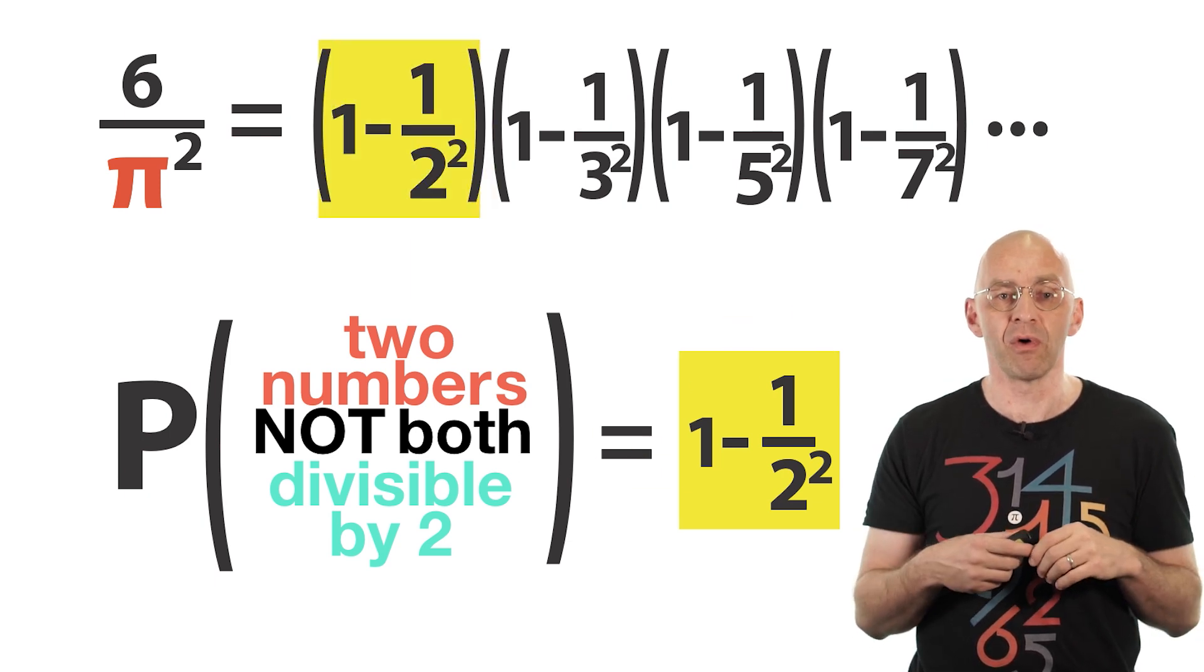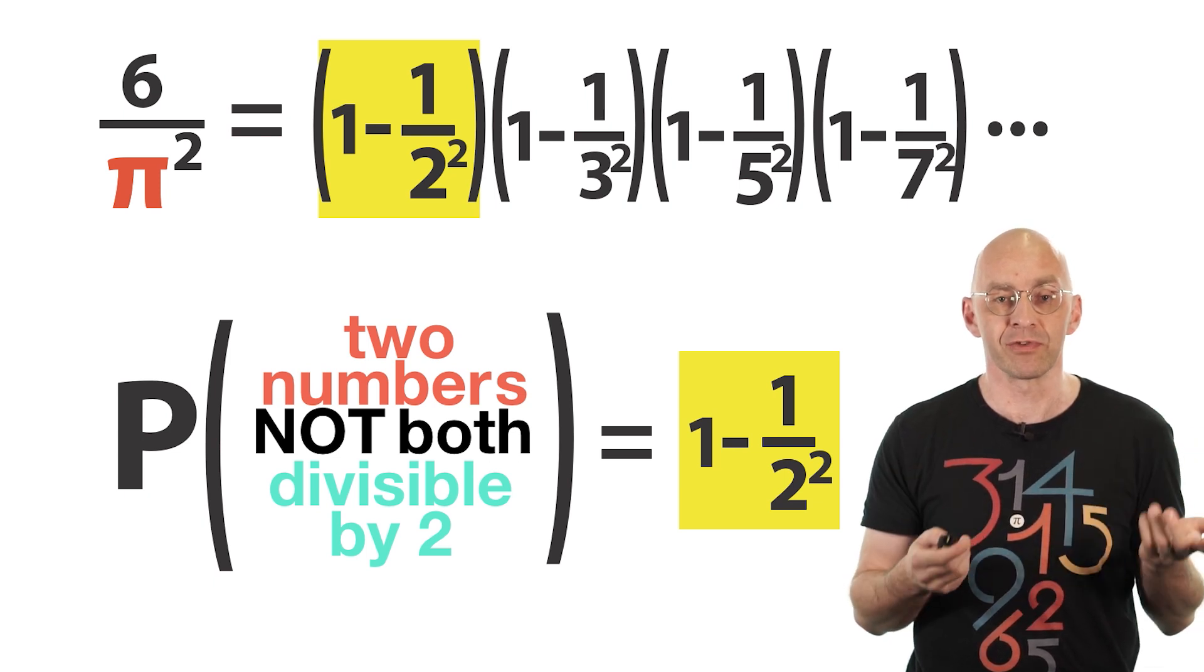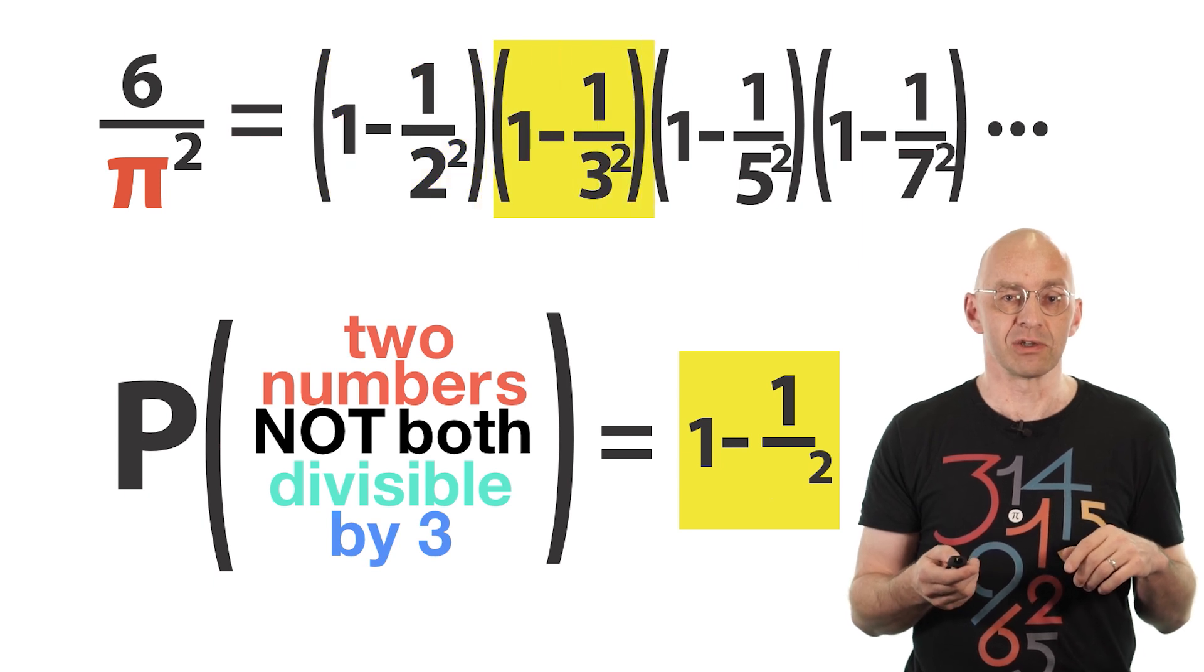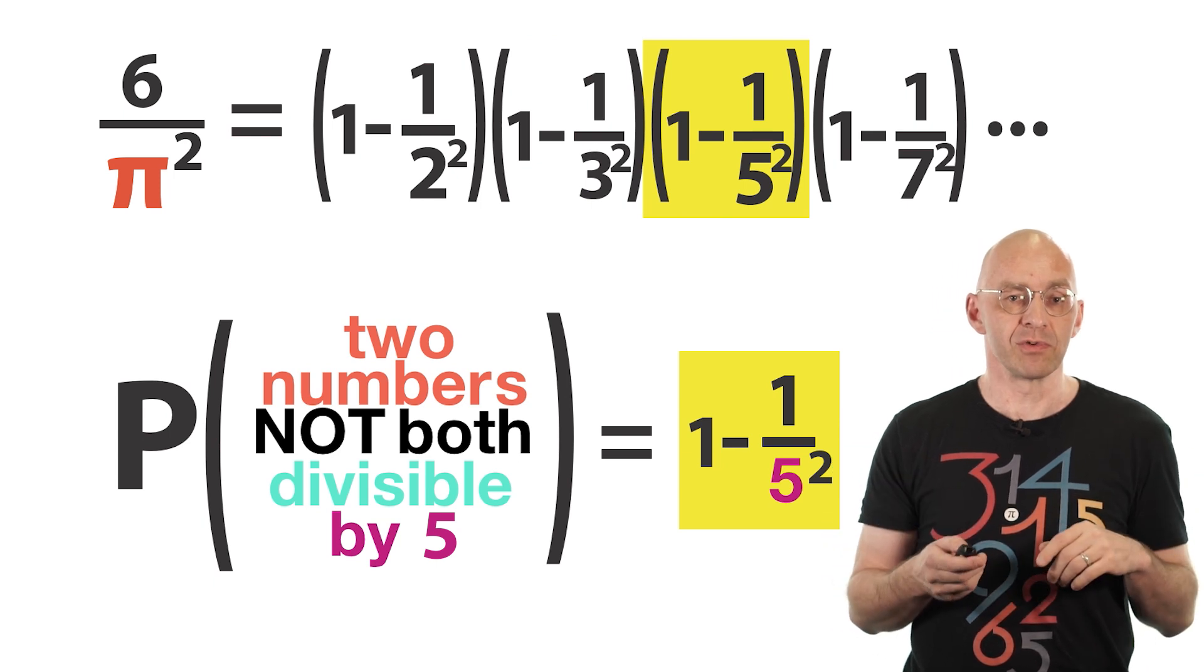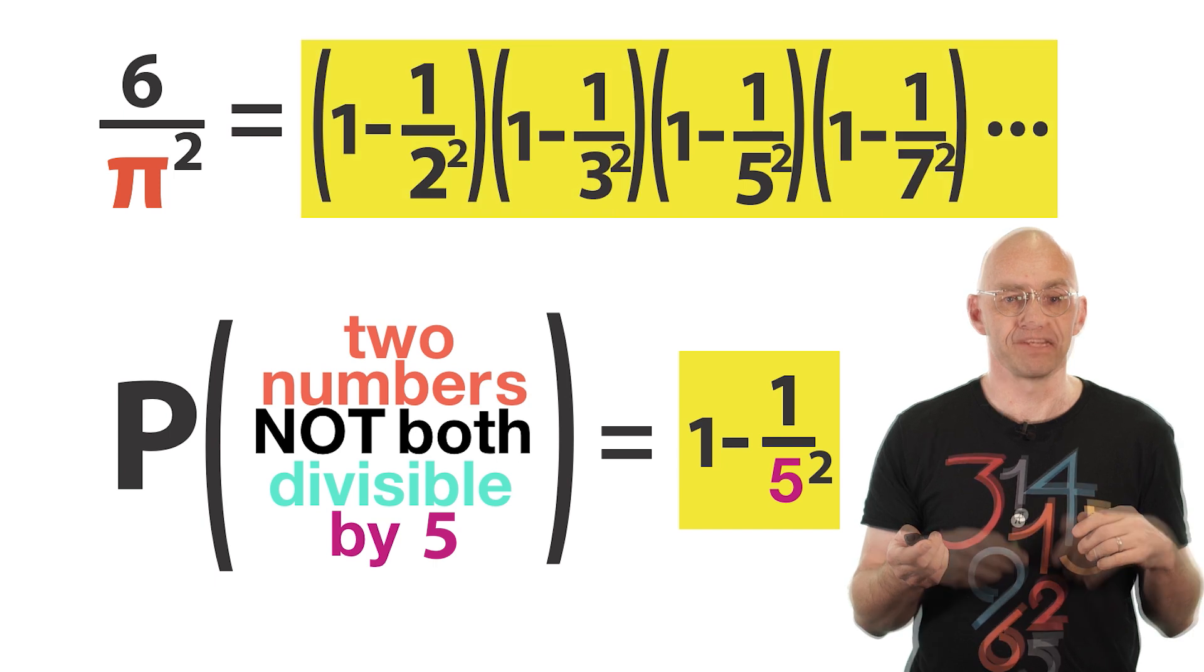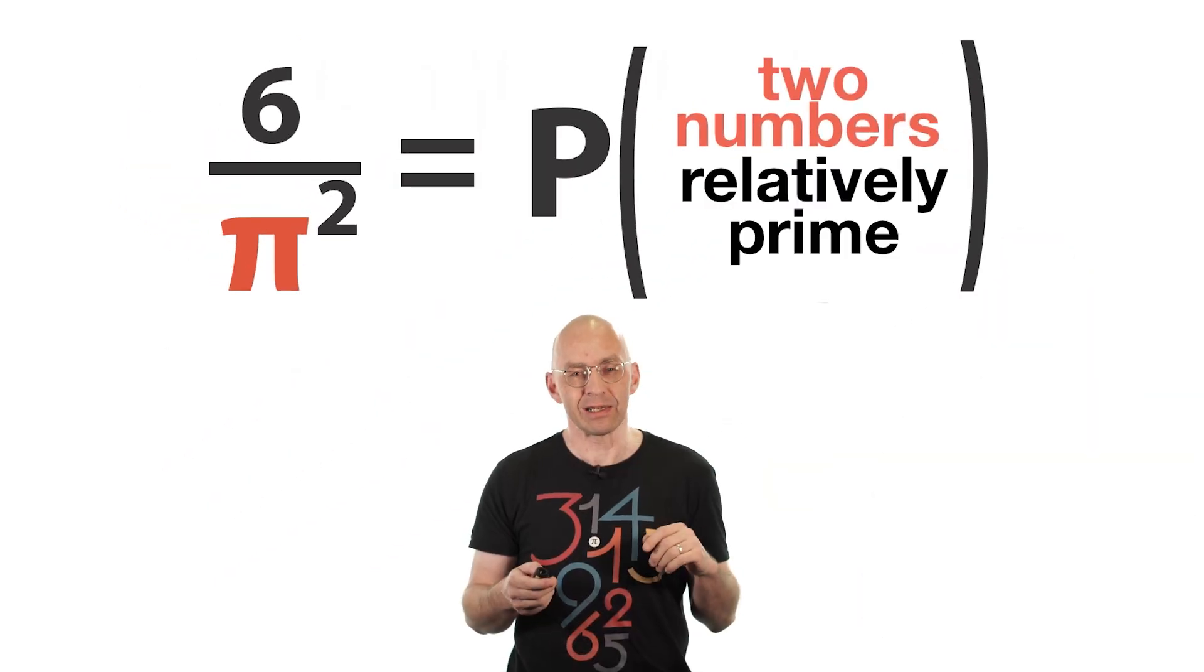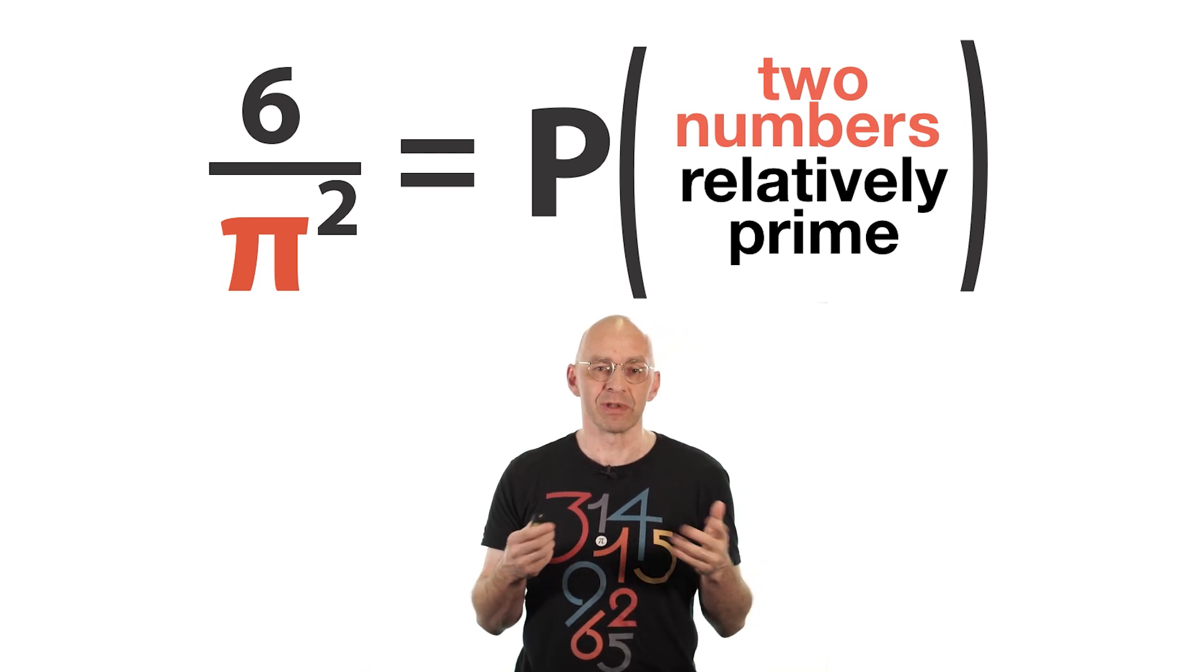Great. Now we can play the same game for all the other prime numbers. So, for example, that the probability that not both numbers are divisible by 3 is just 1 minus 1 over 3 squared, which is equal to the second factor. And so on. Which shows that the probability of both numbers to have no common prime factors is equal to the infinite product. And this implies that the probability of both numbers to be relatively prime is equal to 6 over pi squared.